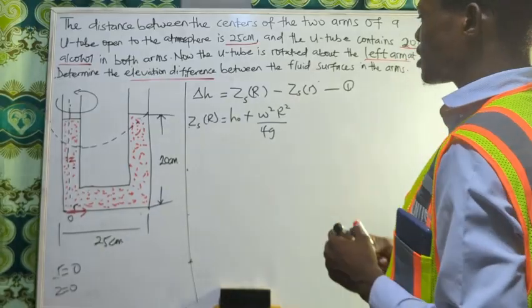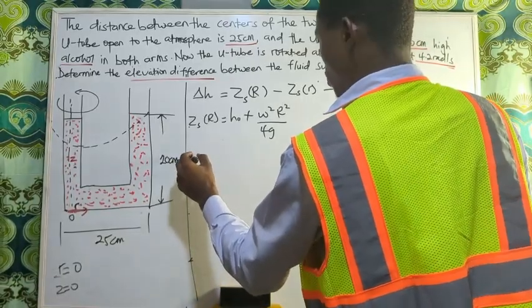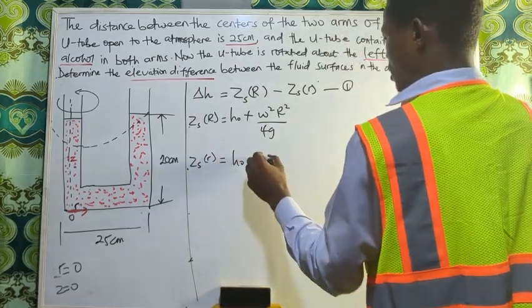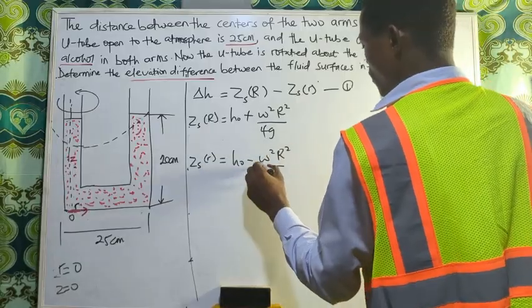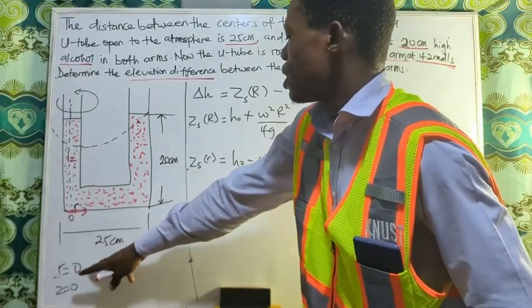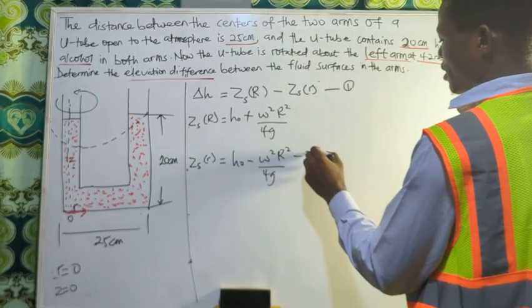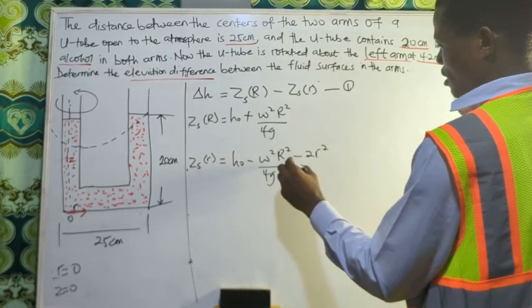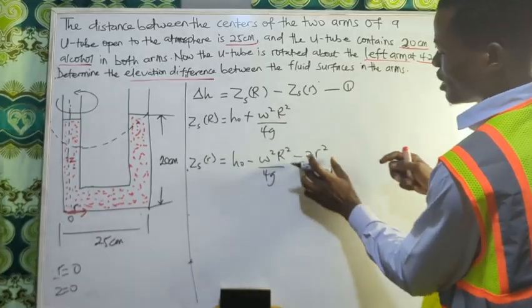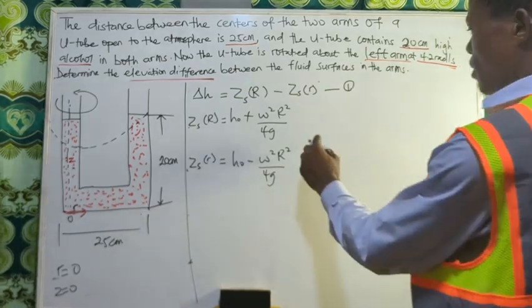The formula for the small r, the free surface of the small side, is going to be h₀ minus ω²r²/4g. Since we made the statement that small r equals zero, we won't include this term because it will be zero. We just get h₀ over here. Writing this is correct, so I didn't include the zero term at first.